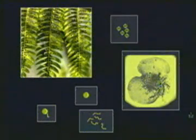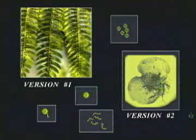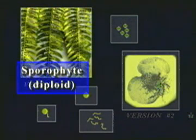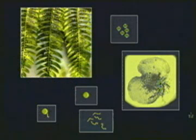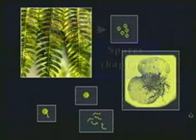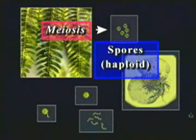When ferns reproduce, they do so in two distinct steps, in which two different versions of the plant are active. The spore-producing plant seen here is called the sporophyte, or sporophyte generation. The sporophyte is a diploid organism because it has two full sets of chromosomes. But since it makes spores by meiosis, or reduction division, they end up with just one set of chromosomes and are haploid.